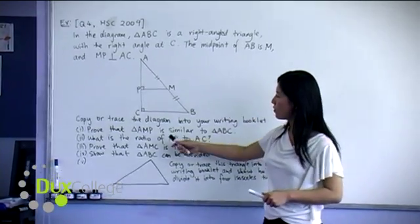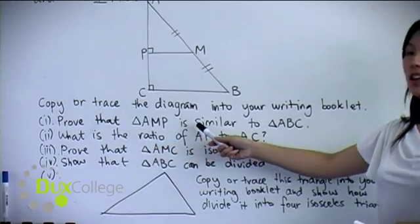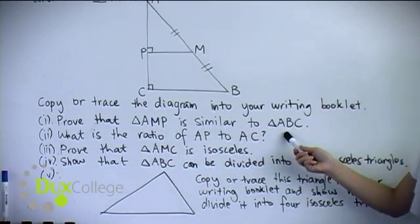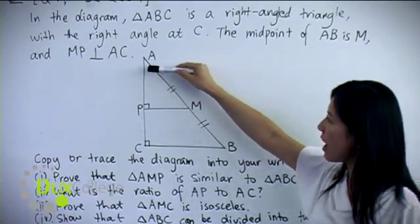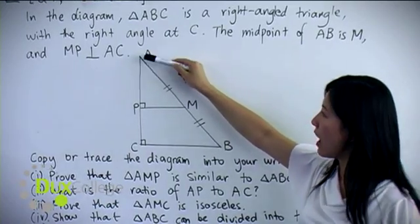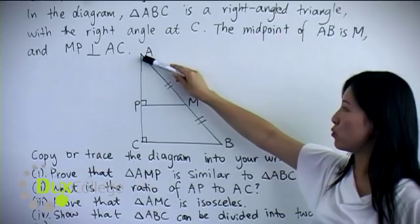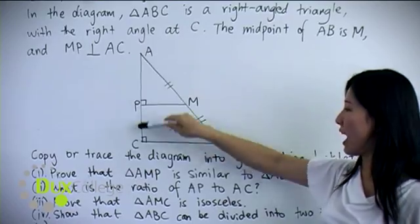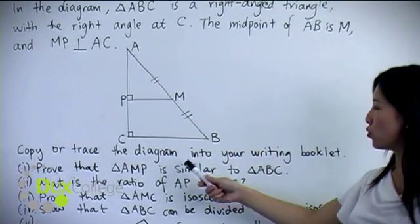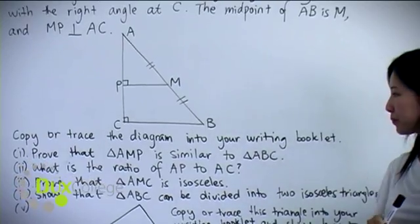For the first part, we want to prove that triangle AMP is similar to triangle ABC. Angle A is common, and angle APM is equal to angle ACB, which is given. So these two triangles are similar because they are equiangular.